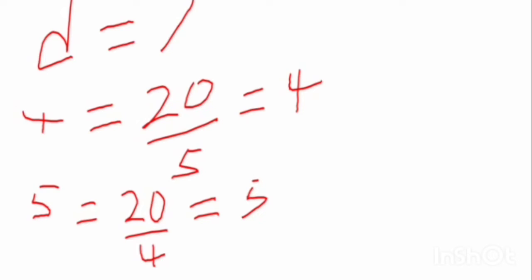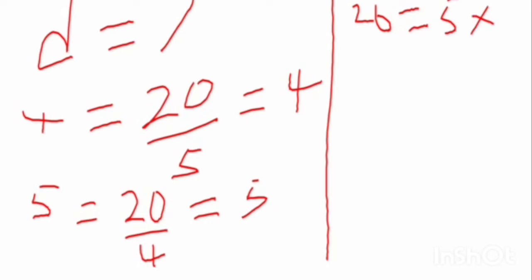If 20 is not given, you will multiply 5 by 4, and that will give you 20. At this point, let's move on to the second sample, still under example 2.